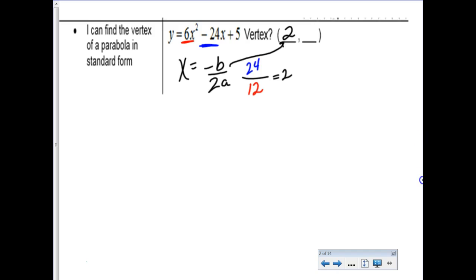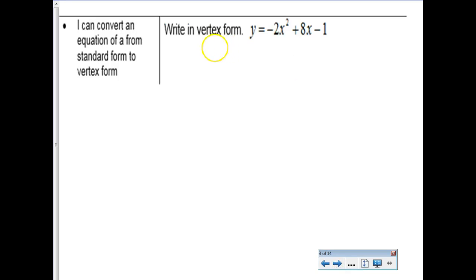And then in order to find the y value, you'd go to your function, and you plug in a 2. So 6 times 2 squared minus 24 times 2 plus 5. I'm going to cheat. I think I have the answer key here. Looks like it's 19. So obviously, y'all can add, I'm really tired right now, and I can't.